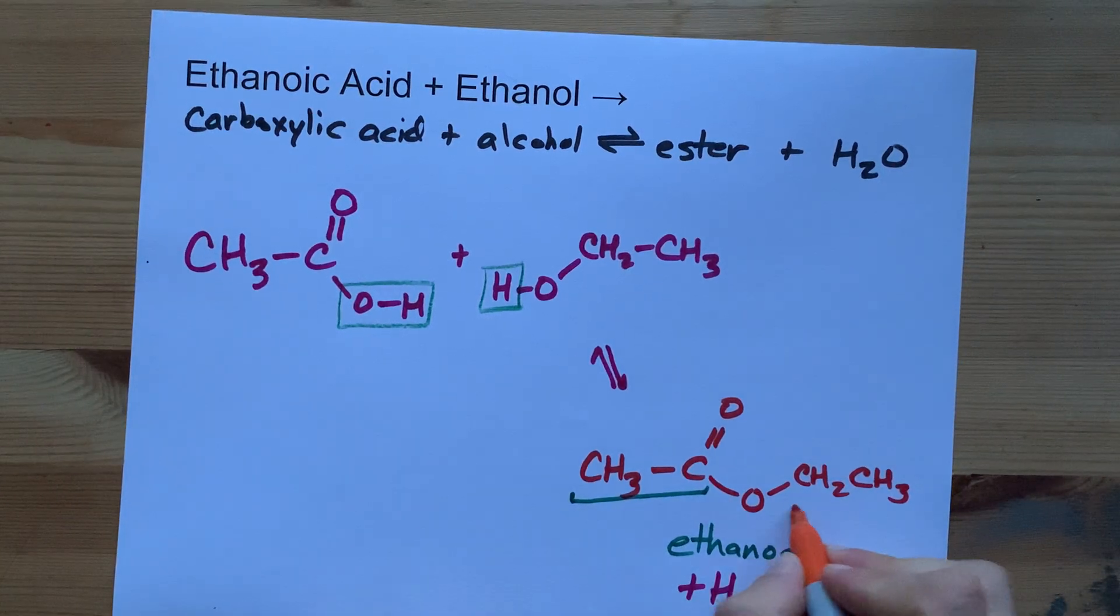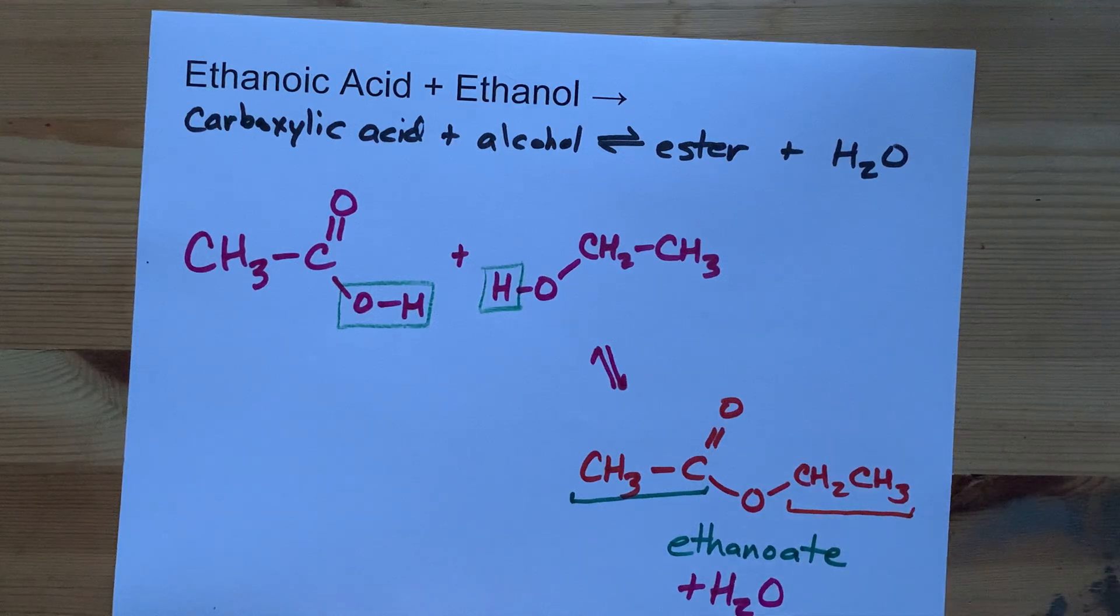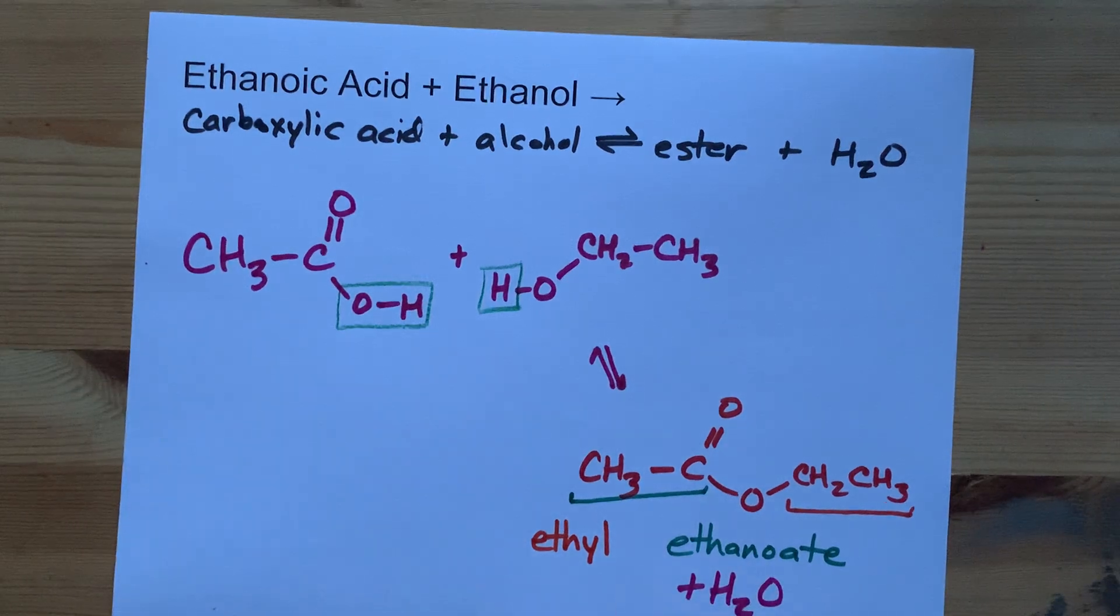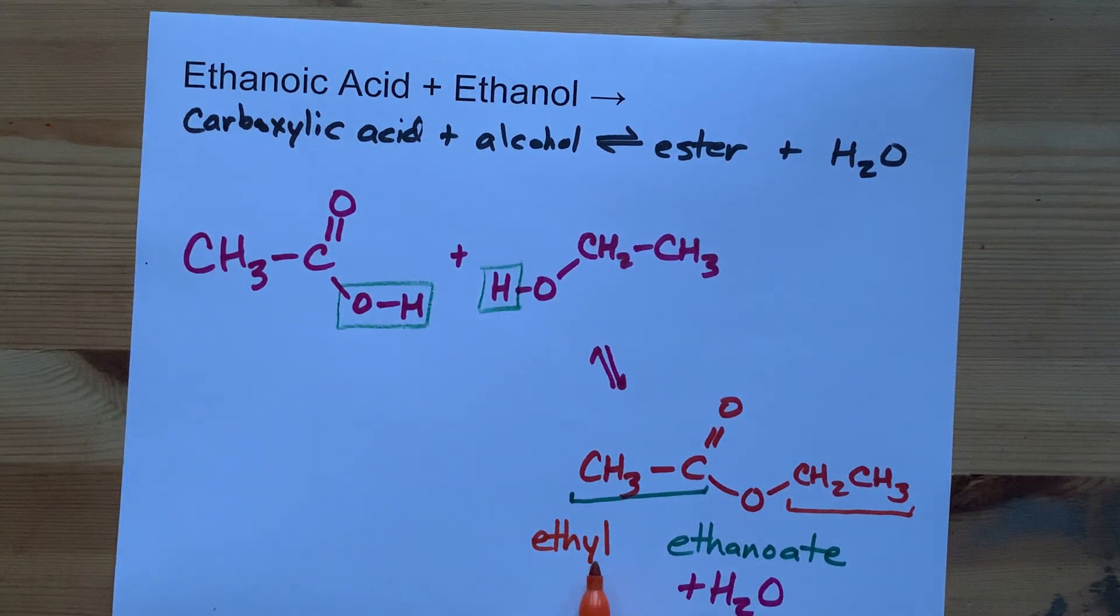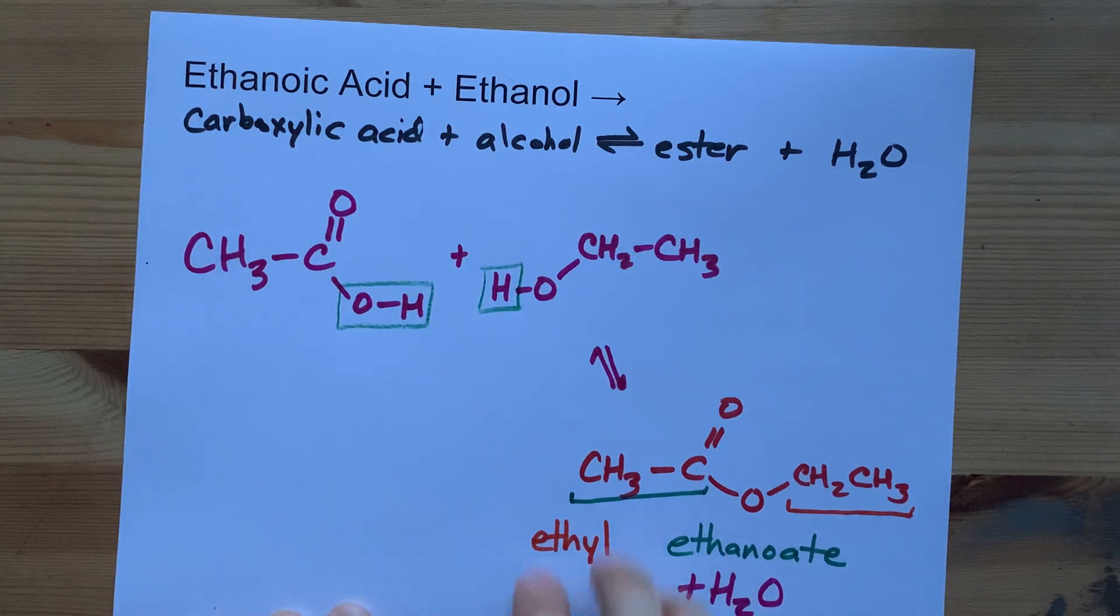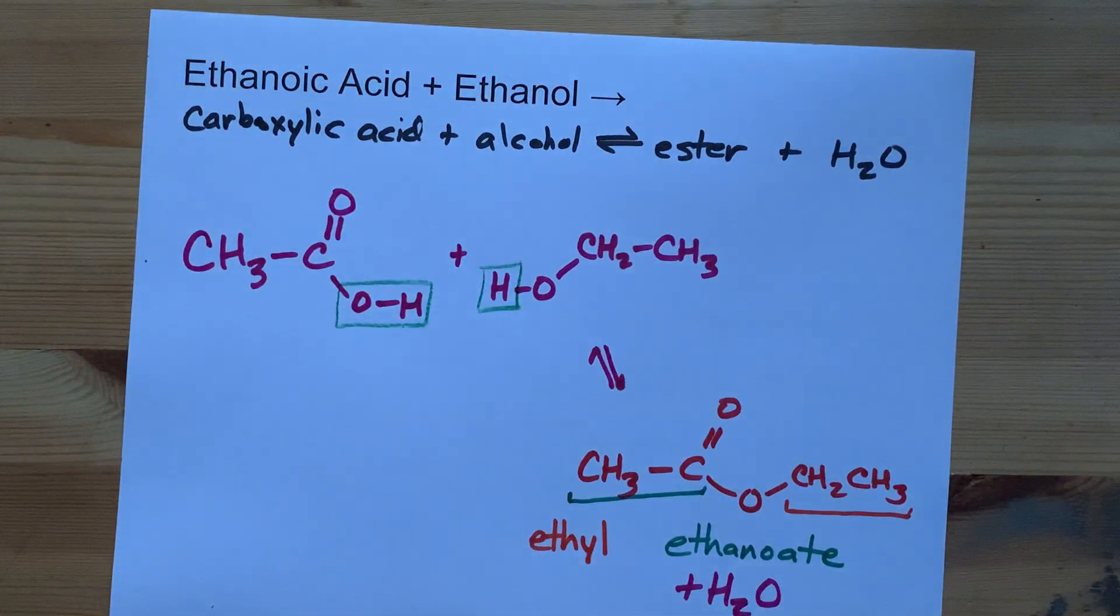And then the bit that's connected to the single bonded O is named as though it's a substituent, but you're not going to give it a number, and you're going to make sure there's a space in between it and the main ester name. Ethyl ethanoate is the name of the ester that's formed here.